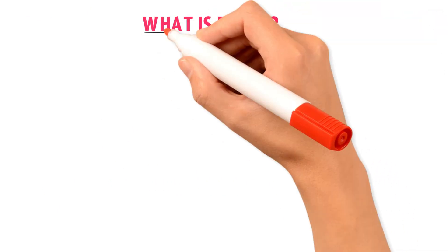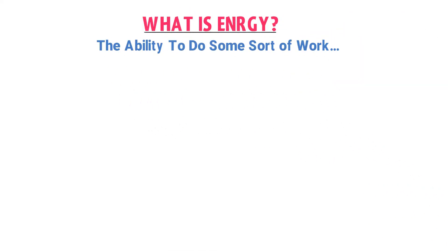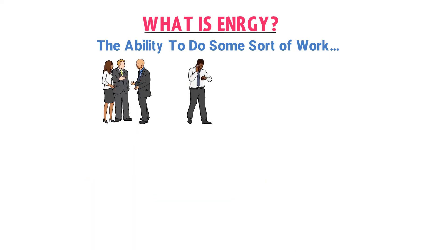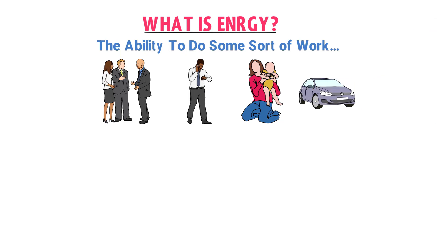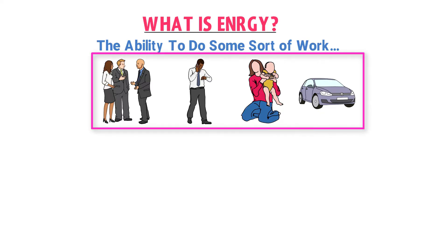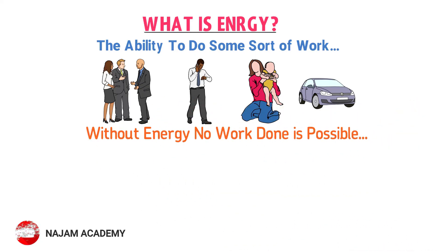Now, what is energy? Energy is defined as the ability to do some sort of work. For example, you need energy to walk, you need energy to talk, you need energy to grow, and a car needs petrol which contains chemical energy to run. Thus, we all need energy for doing different jobs or work. Without energy, no work is possible.